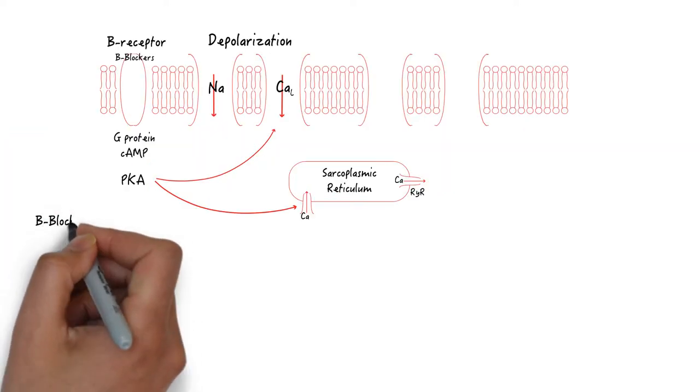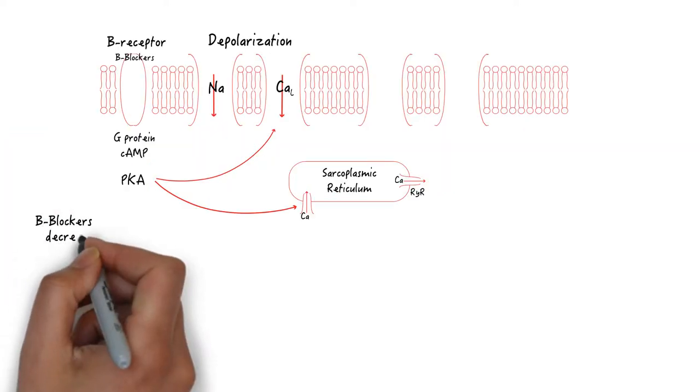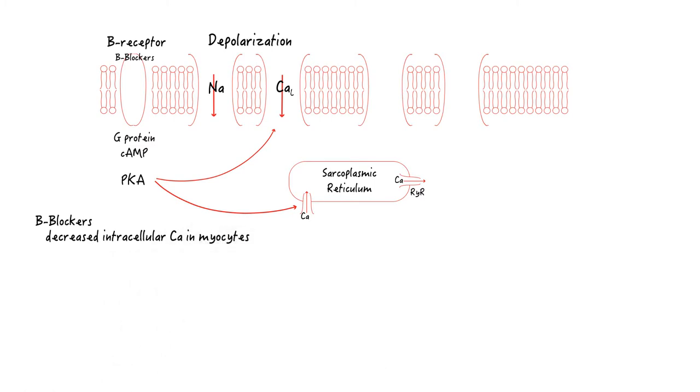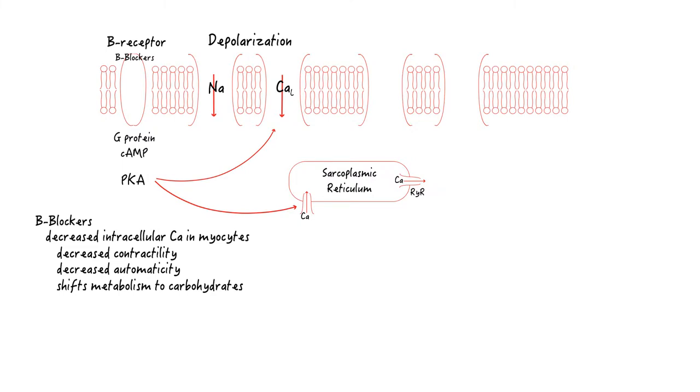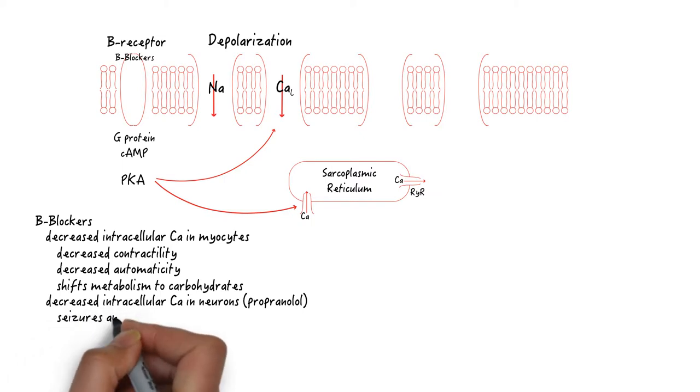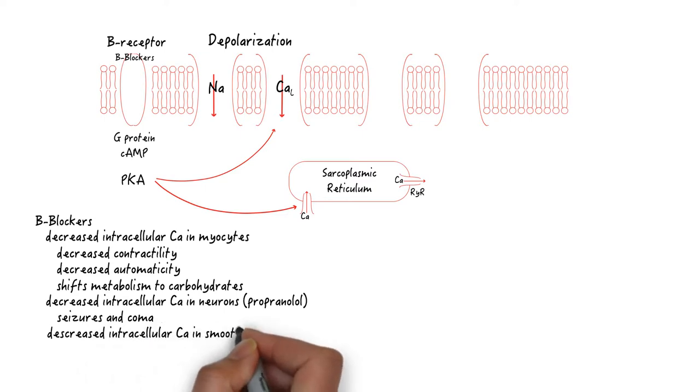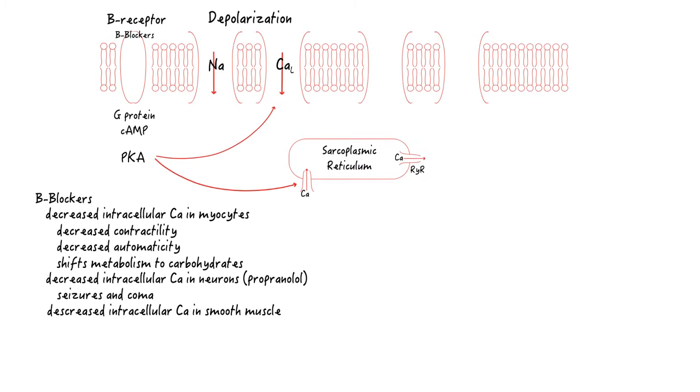Beta blockers, therefore, inhibit this pathway. And so the net effect is decreased intracellular calcium in all of your cells. In the myocyte, this means decreased contractility. Decreased automaticity because the pacemaker cells of your heart uses calcium for its spontaneous depolarization. It also shifts the myocyte metabolism away from free fatty acids and lactate and instead to carbohydrates. Lipophilic beta blockers like propranolol can cross the blood-brain barrier and decrease intracellular calcium in neurons causing seizures and comas. Decreased intracellular calcium in smooth muscles cause profound vasoplegia and hypotension.